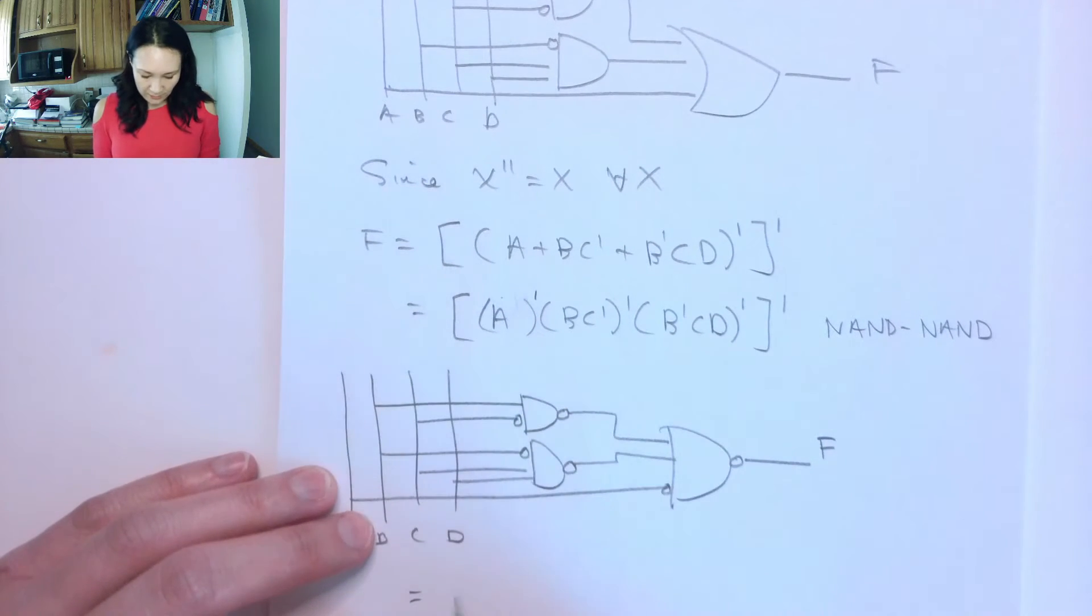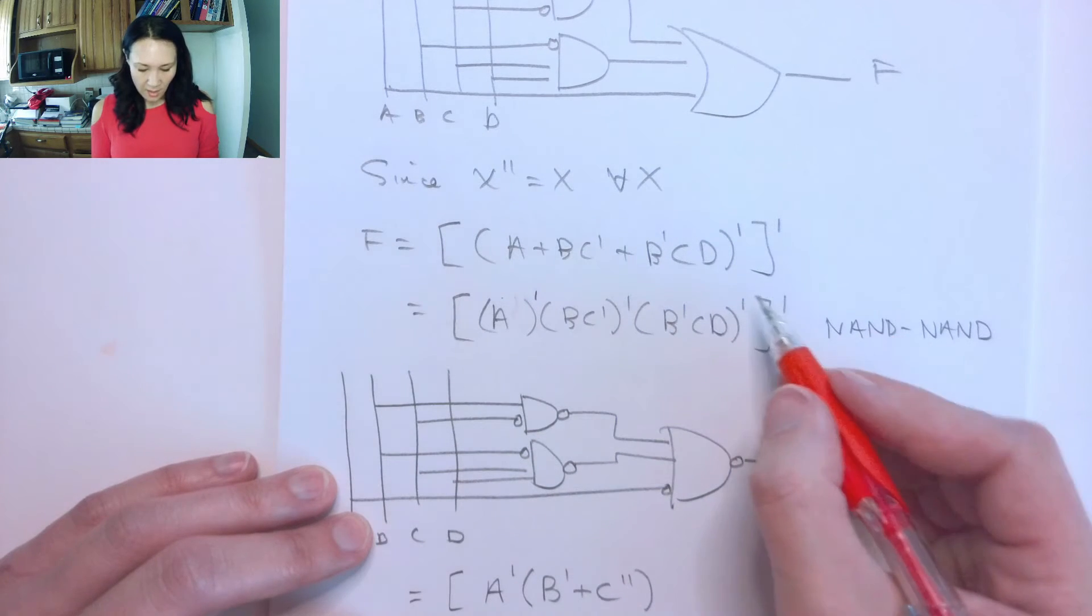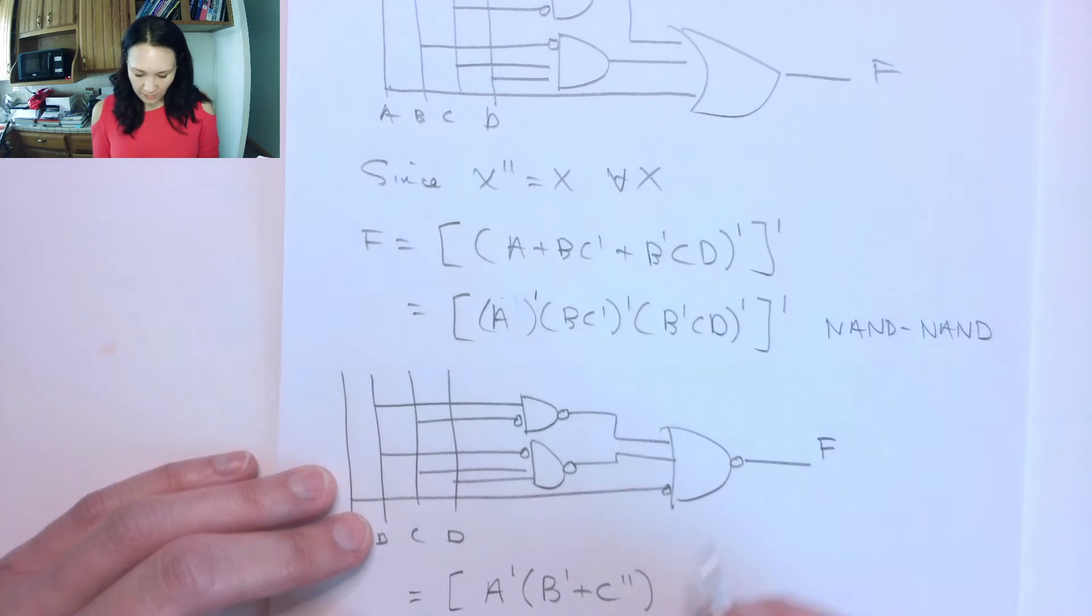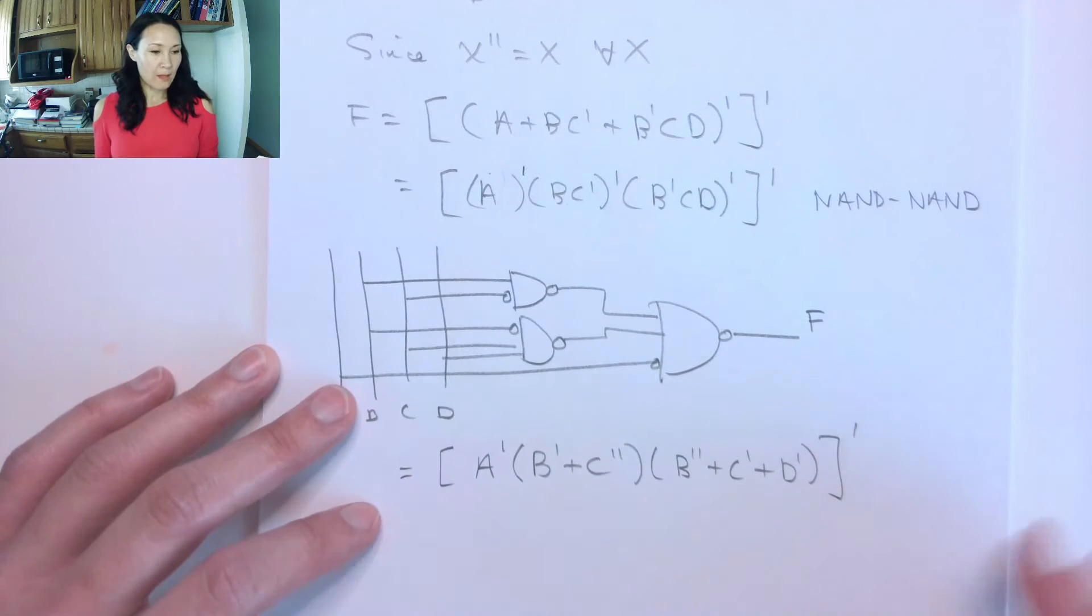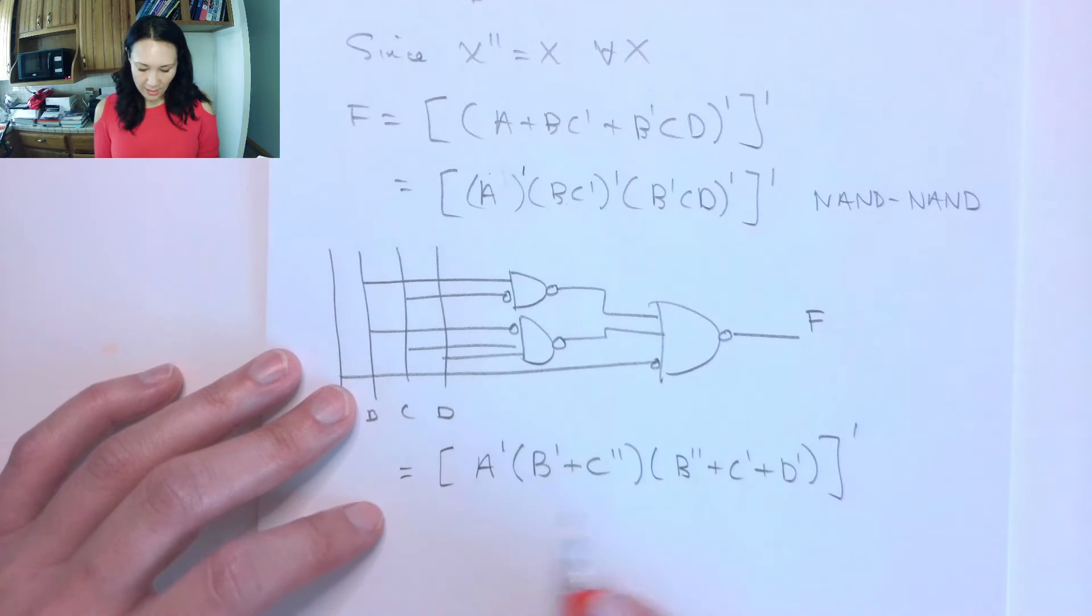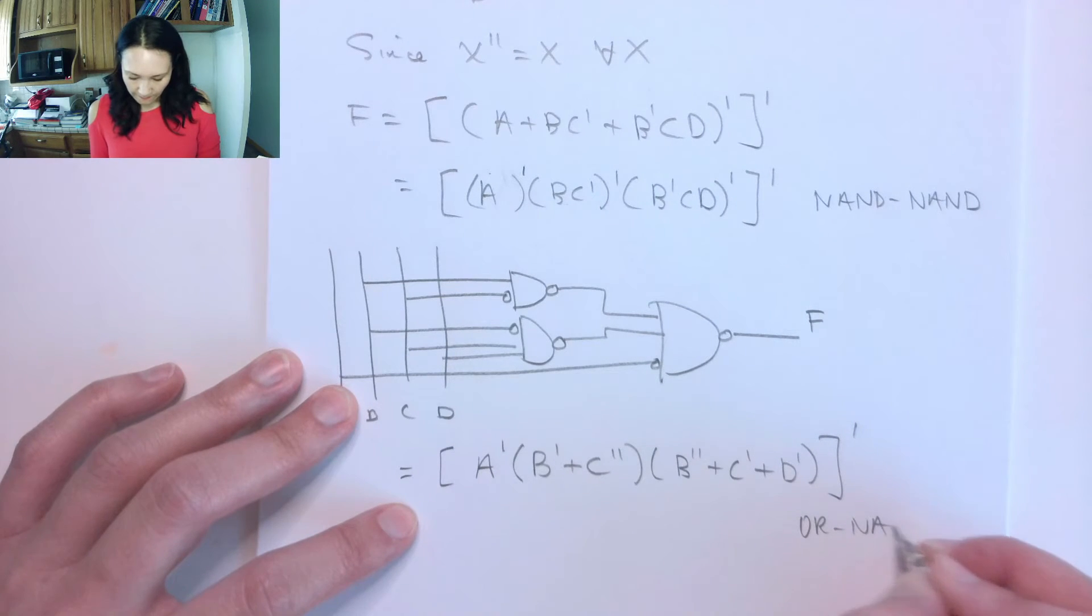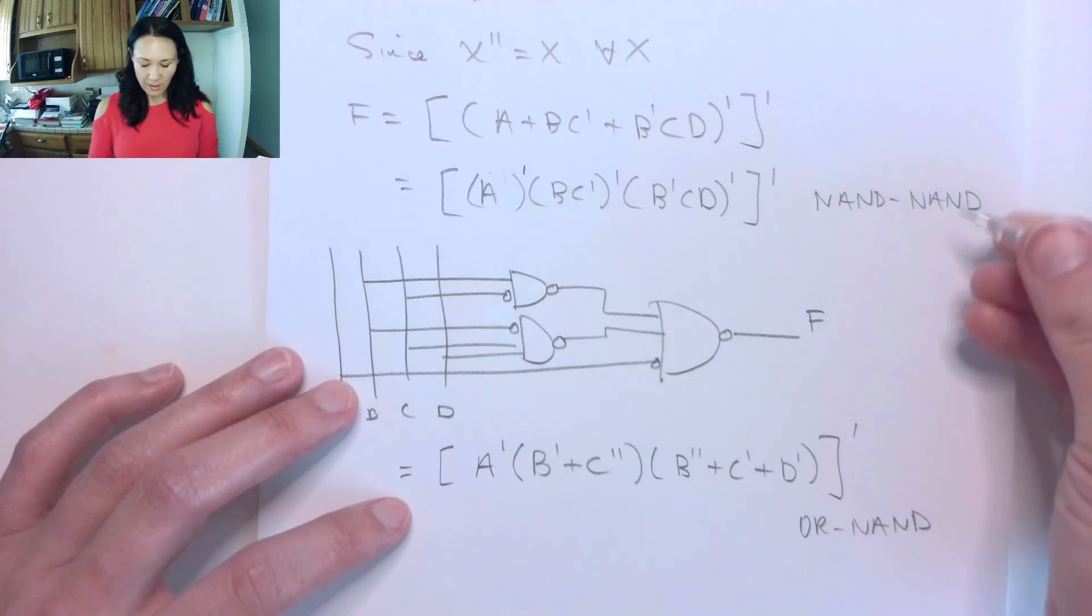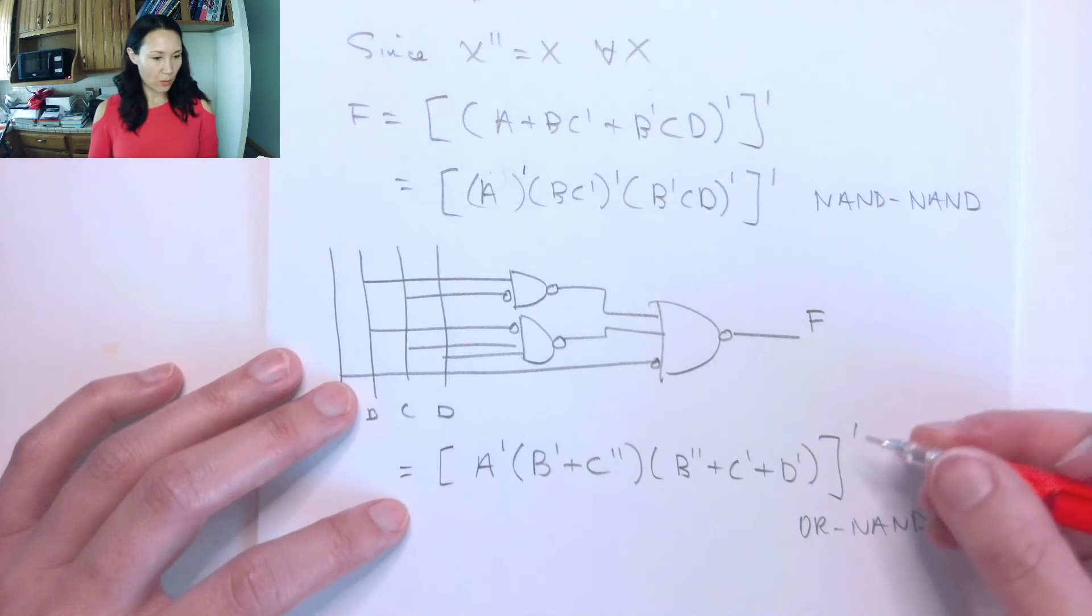So if I continue, this is going to give me A NOT. Now if I distribute this NOT into here, this will be B NOT OR C NOT NOT. I distribute this NOT into here. This gives me B NOT NOT OR C NOT OR D NOT. And then I still have this NOT on the outside. So this implementation is now an OR NAND implementation.